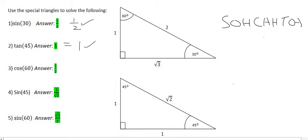Moving on to number three, cos of 60. We go to the 60 degree — here it is. We know that cos is the adjacent over the hypotenuse, and so that's going to give us one over two.